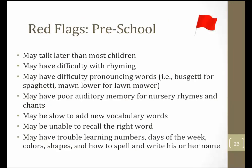When screening students for dyslexia, we want to be cognizant of red flags that may emerge as early as preschool. Looking at a preschool student or reviewing educational records, you may see evidence that the student began to acquire spoken language later than most children, had difficulty with phonological skills such as rhyming, had difficulty pronouncing words — for example, saying 'biscetti' instead of 'spaghetti' — had poor auditory memory for nursery rhymes, was slow to add new vocabulary, was unable to recall the right word, or had trouble learning numbers, days of the week, colors, shapes, or how to spell or write their name.